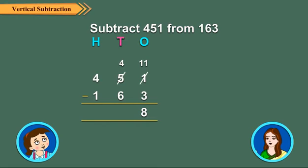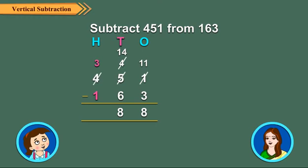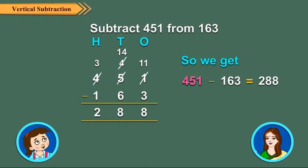Subtract the 10's. Since there are not enough 10's, you will have to regroup. 4 100's and 4 10's is equal to 3 100's and 14 10's. 14 10's minus 6 10's is equal to 8 10's. Subtract the 100's. So, we get 451 minus 163 is equal to 288.